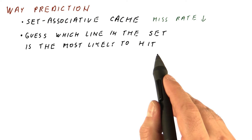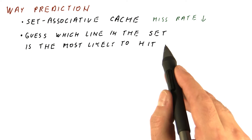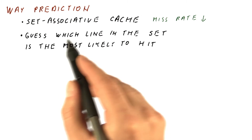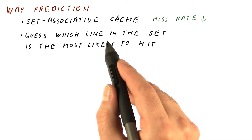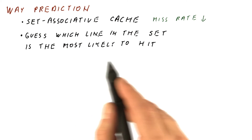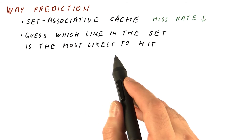We use the index bits to determine which set we'll be looking at, and now instead of reading out all the tags in that set and checking which one hits, we guess which one is likely to hit and just check that one. This gives us an access time similar to a direct-mapped cache if we guessed right.